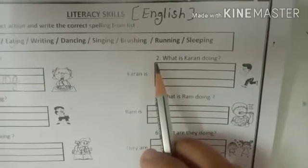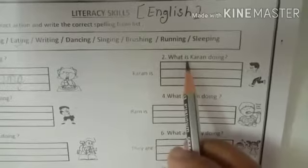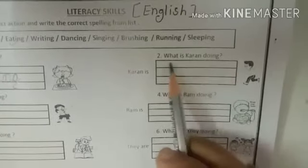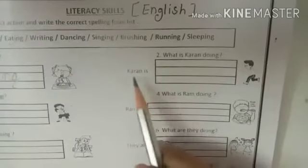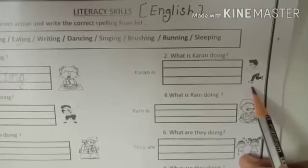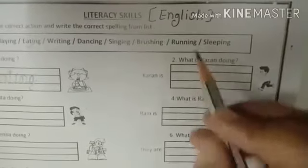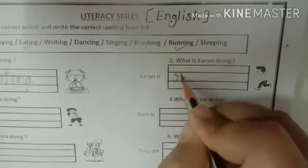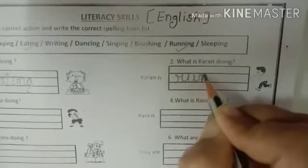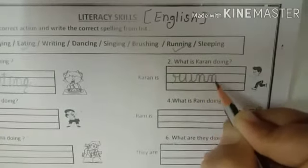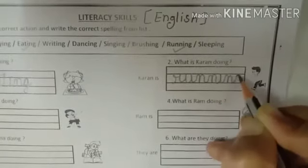Question number 2. What is Karan doing? Karan is, look at the picture, running, bhaag raha hai. So write the spelling of running: R-U-N-N-I-N-G, running.